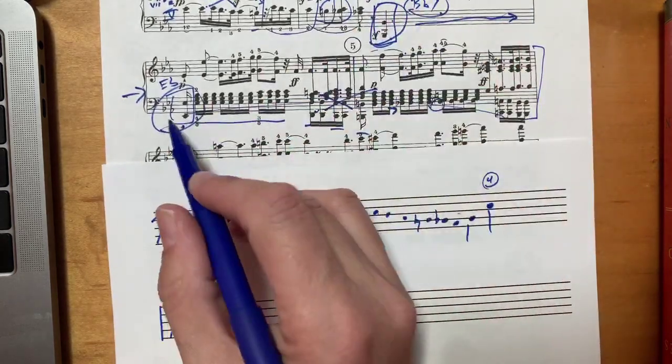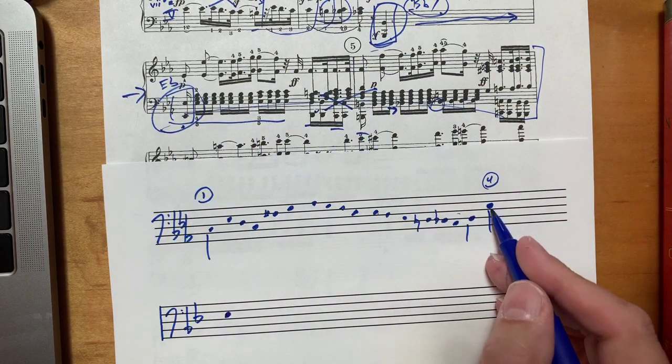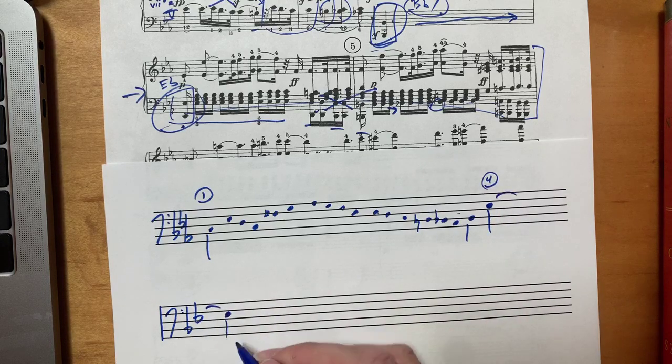Okay, so we got E-flat, D, C, B. I'm gonna repeat the E-flat from here to here just so I can see it. D, C, B.